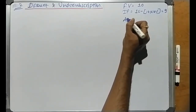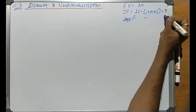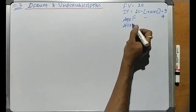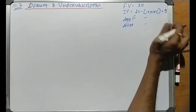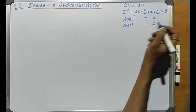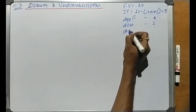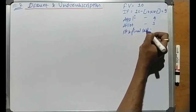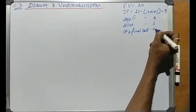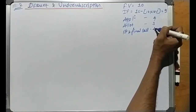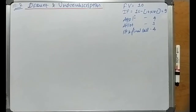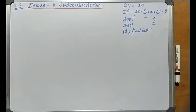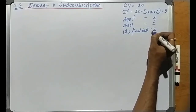Now, how is this amount collected? On application they are collecting rupees 4 per share, on allotment rupees 3 per share, and on first and final call — there is a correction here — it is not rupees 4, make it rupees 2 per share. So 4 plus 3 plus 2 equals 9, which matches the issue price.